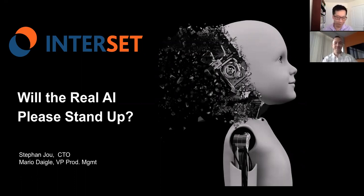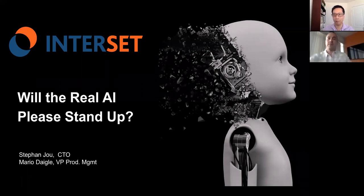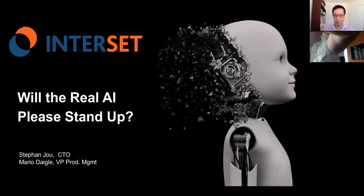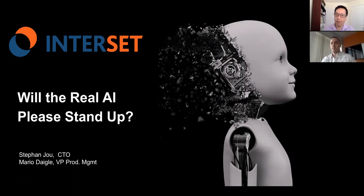Quick introductions: I'm Stefan, I'm the CTO here at Intersect. My background is in analytics — lots of fun and excitement implementing analytical systems to solve some really hard and important problems. I'm very excited to talk about what types of AI can be applied to solve hard, important problems inside cybersecurity, and how you can tell the difference between effective AI — so-called 'real AI' — and what may not be quite as effective.